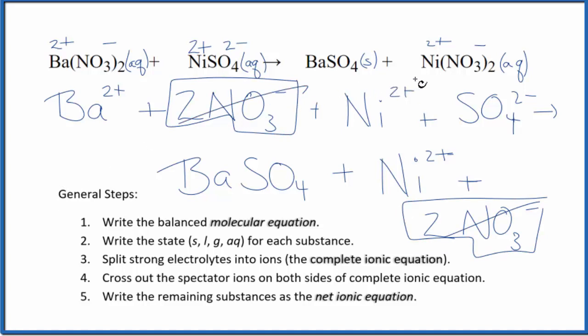We can cross those out. Likewise, we have nickel 2+ ions here and in the products. Cross them out.